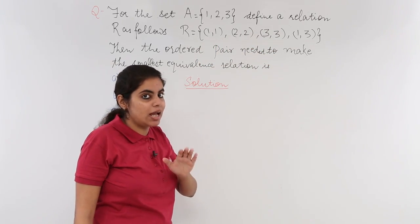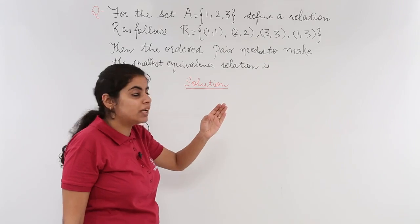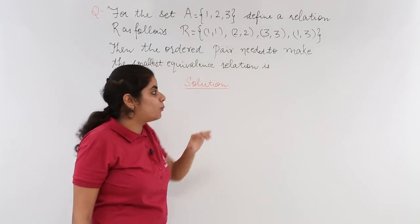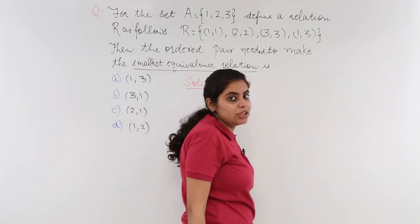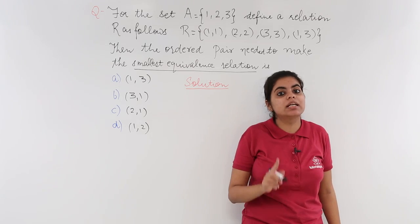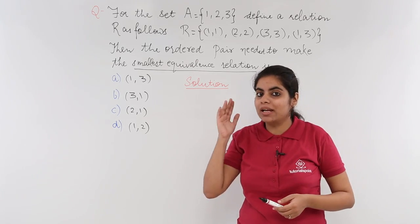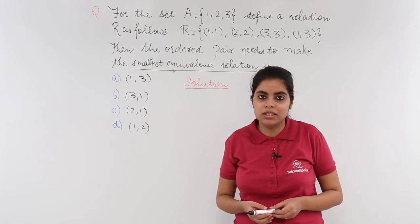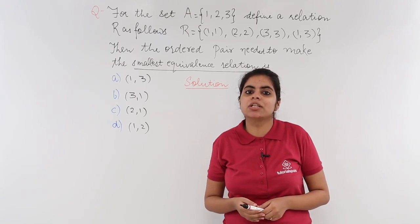Now, I have a relation, I have a set, and what do I need to find out? I need to find out the ordered pair needed to make the smallest equivalence relation. Let's all get reminded of what was equivalence relation.